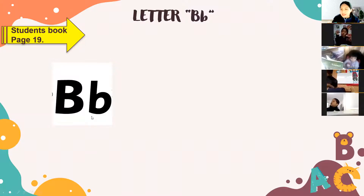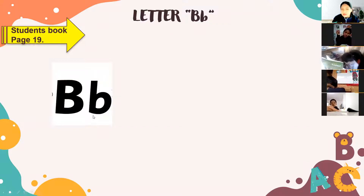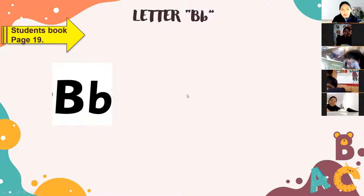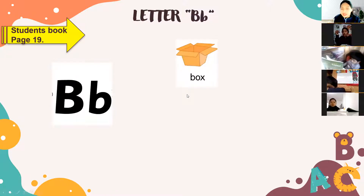In English, the letter B is pronounced 'b' — se pronuncia be, bonito. Okay? Very good. For example, B for box, okay?